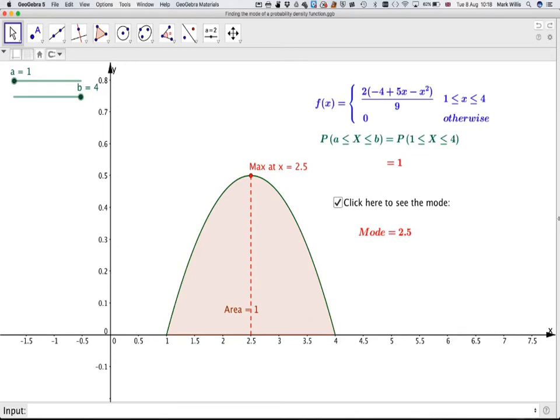which happens at x equals 2.5, so the mode will be 2.5. Now you could, because this was a quadratic, use completing the square to find the maximum point, or use the fact that −b/2a gives the vertex of a quadratic as well.